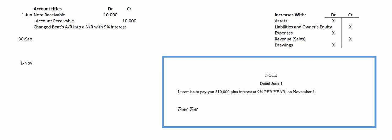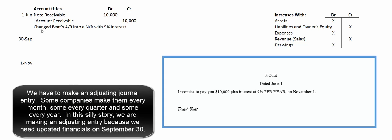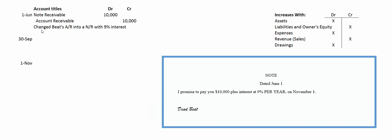Let's pretend it's September 30th, so four months have gone by — June, July, August, and September. We have to prepare an income statement and a balance sheet, maybe to get a bank loan. Well, he hasn't paid us any interest yet, but we've earned it — we've earned four months worth of interest. So we're going to have to debit interest receivable and credit interest revenue.